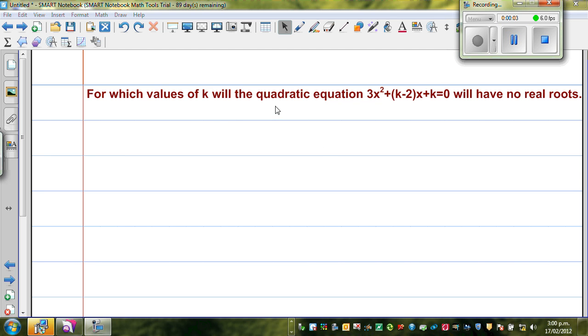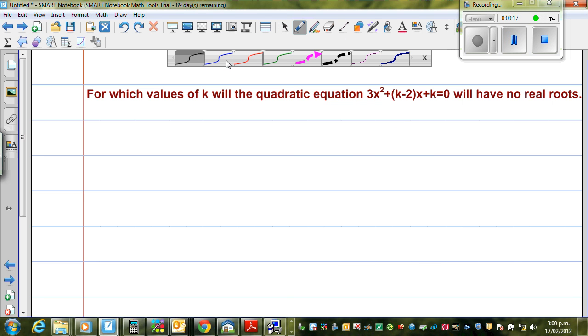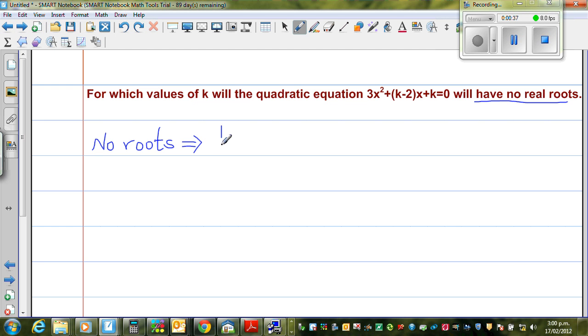For which value of k will the quadratic equation 3x² + (k-2)x + k = 0 have no roots? Let's understand what this sentence means. The key words are no roots. Whenever you have these key words, one formula should pop out of your brain: no roots means b² - 4ac < 0.